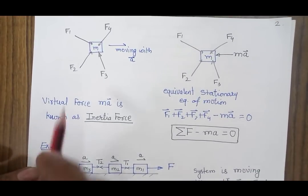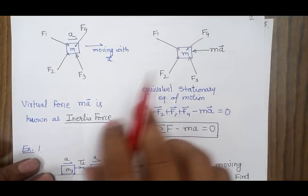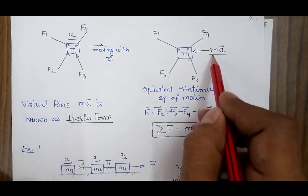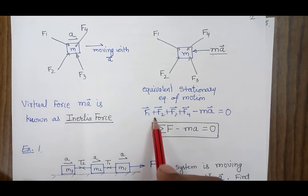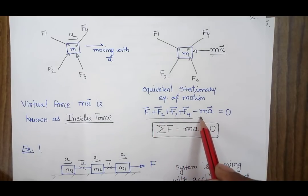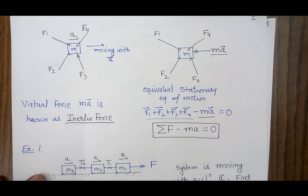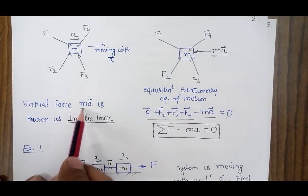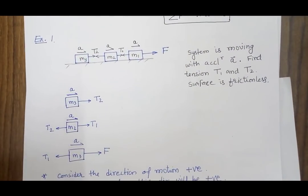To summarize the principle: we have a system where four forces are acting and the system is moving with acceleration a. Based on D'Alembert's principle, we add an additional force so the system becomes an equivalent stationary system. Writing the equation of motion by considering it as a static system, the summation of all forces along with the additional force will be zero. This additional virtual force is known as the inertial force.